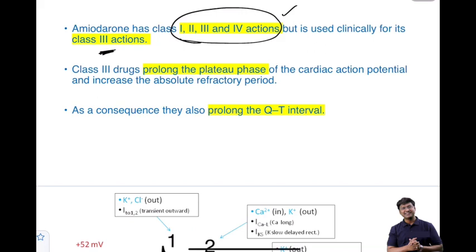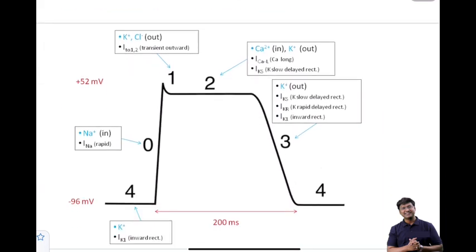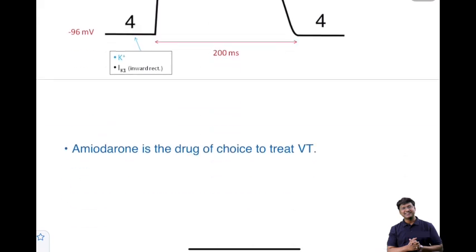Amiodarone has the action of all four classes of antiarrhythmic drugs — class 1, 2, 3, and 4 — but it is used clinically for its class 3 action. Class 3 drugs prolong the plateau phase of the cardiac action potential, increase the absolute refractory period. Because they prolong the plateau phase, they can also prolong the QT interval, and amiodarone can precipitate the development of torsades de pointes.